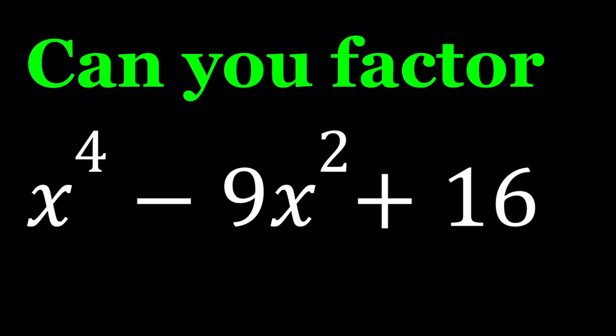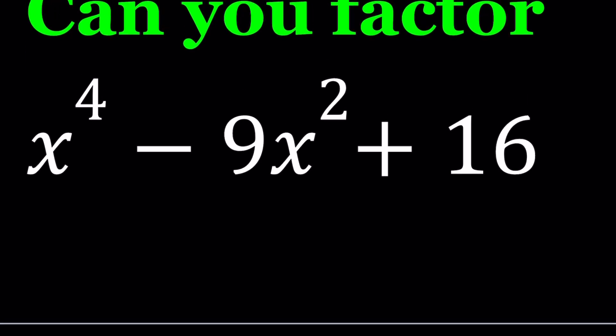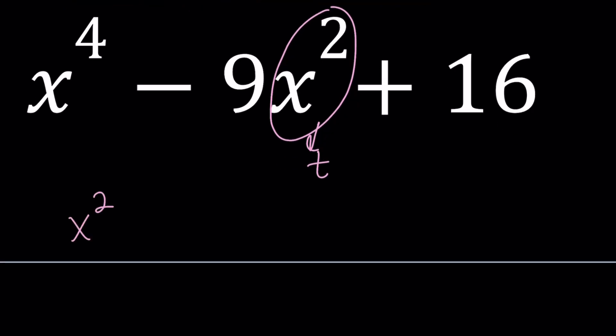One method, obviously, is since this is biquadratic, not quadratic but biquadratic, you can use substitution to turn this into a quadratic. So let's go ahead and call this something. How about t? Then we get t squared minus 9t plus 16.